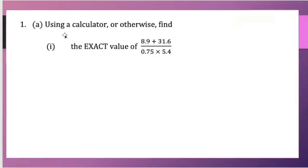Here we're going to use a calculator or otherwise to find the exact value of 8.9 plus 31.6 all over 0.75 times 5.4.